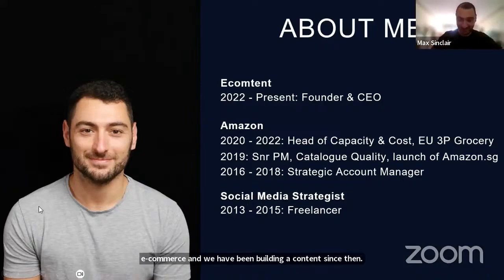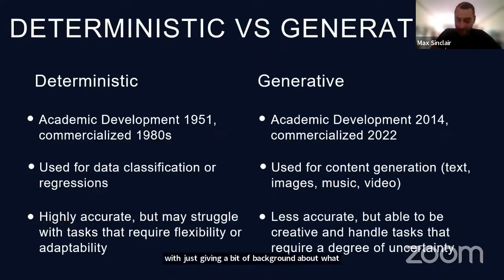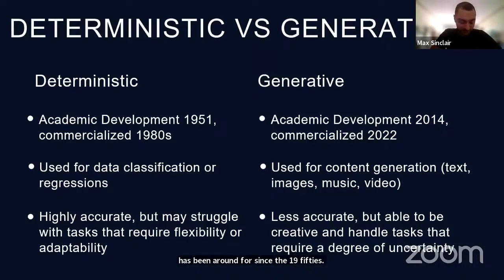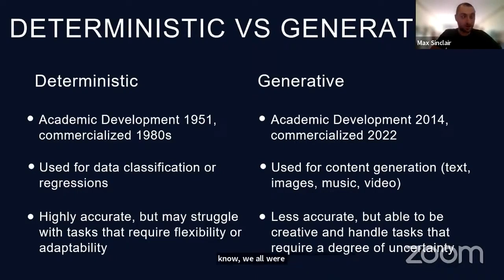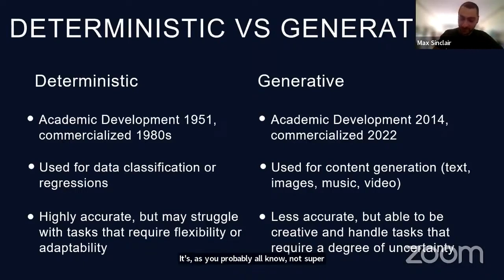I'll start with a bit of background about what generative AI is. AI has been around since the 1950s — we use it in Amazon, in Google Maps. But what we're dealing with now is a fundamentally different type of artificial intelligence which basically enables you to generate new content. It's not super accurate, but it's able to handle a lot of creative tasks.